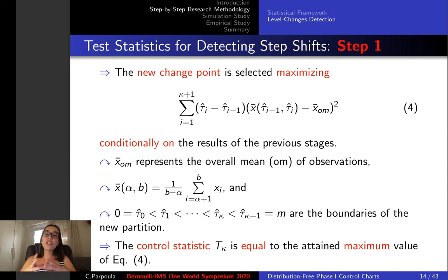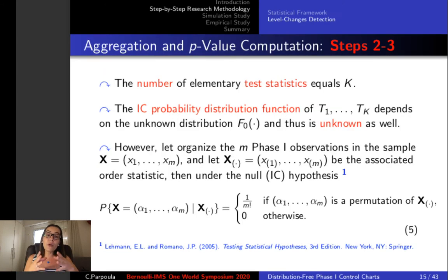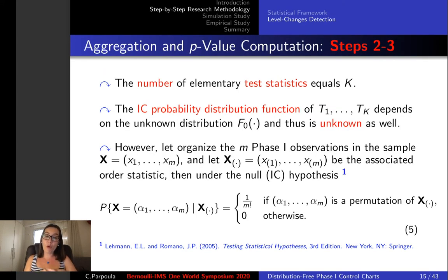In this way we can compute the control statistic, but the research issue which arises is that we don't know their in-control distribution function. So what can we do? We can reorder the xi from the smallest to largest.